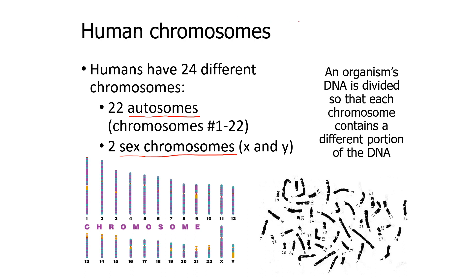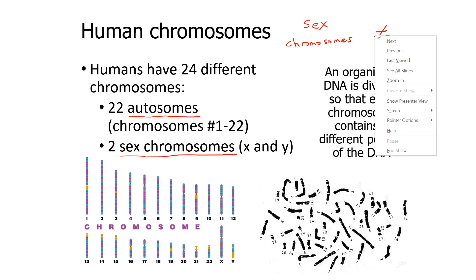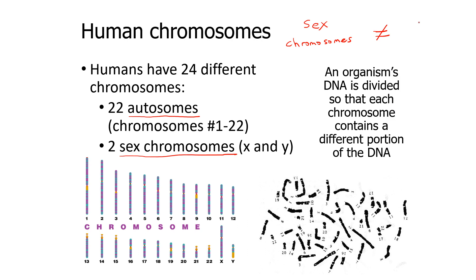One thing some students get confused about is that sex chromosomes are not equal to sex cells — this line through an equal sign means not equal to. Sex chromosomes are protein and DNA associated together, specifically the X and the Y chromosomes. Sex cells are sperm and egg cells, which contain chromosomes inside them.